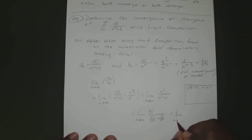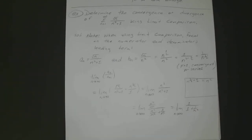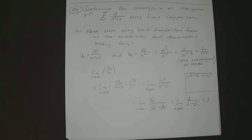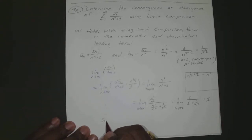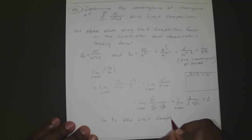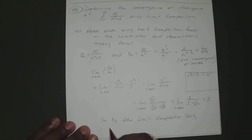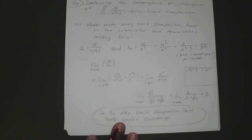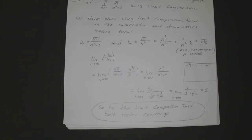As n approaches infinity, 1 over n squared approaches 0, giving us a limit of 1. So by the limit comparison test, both series converge.